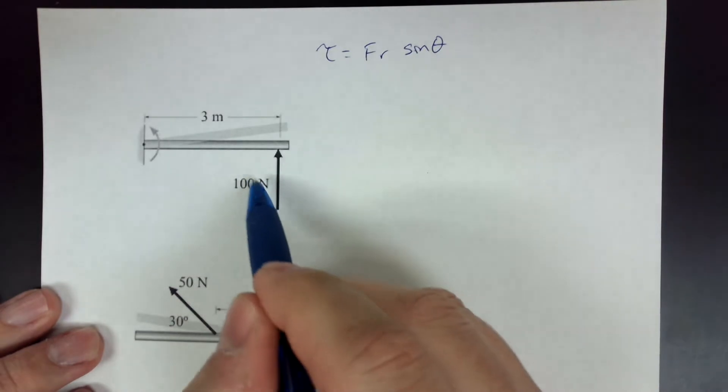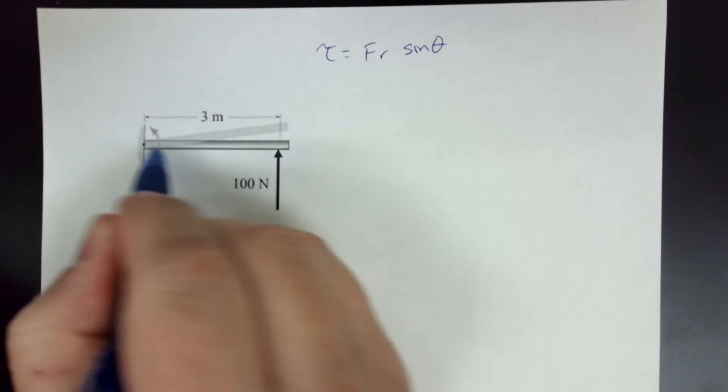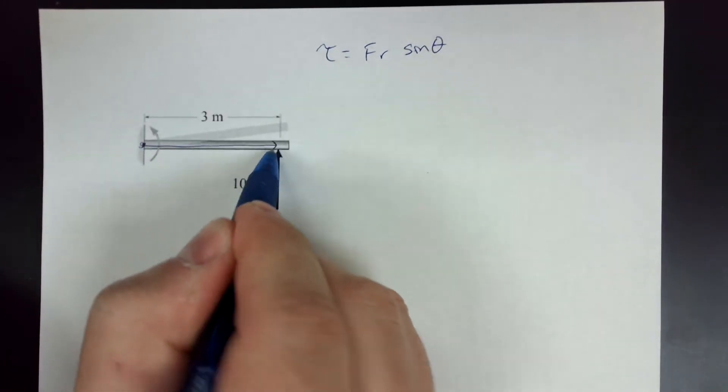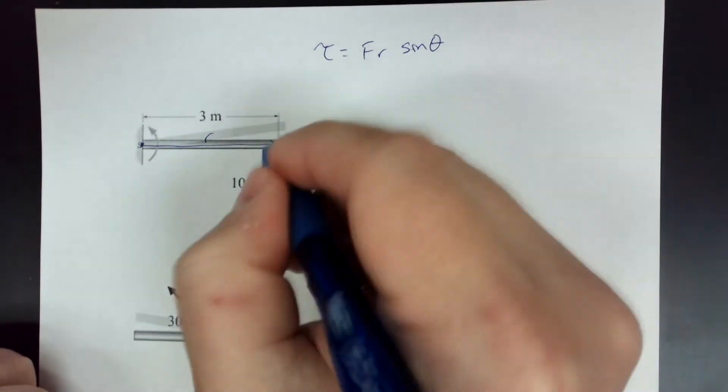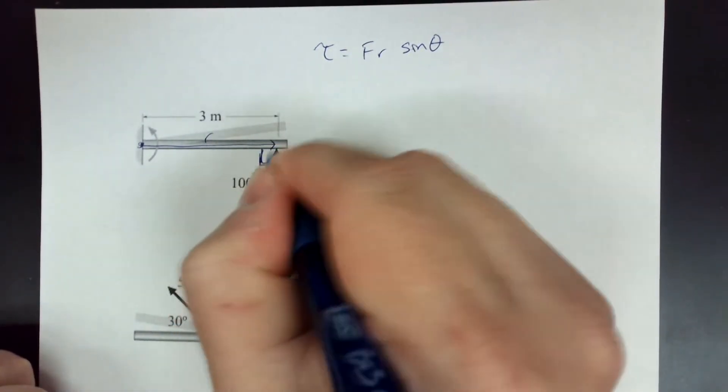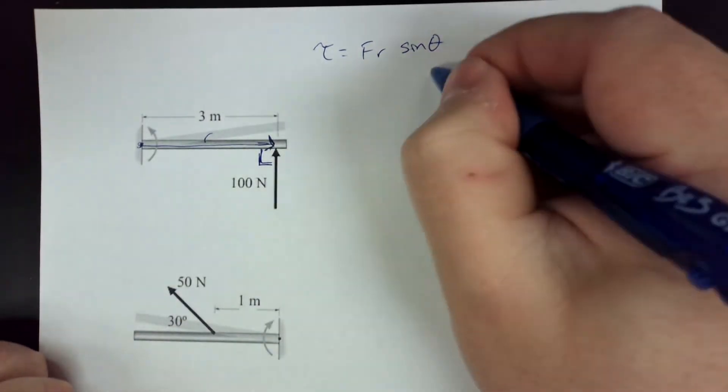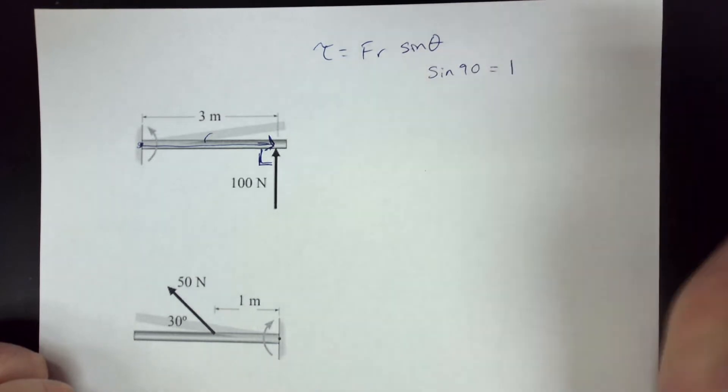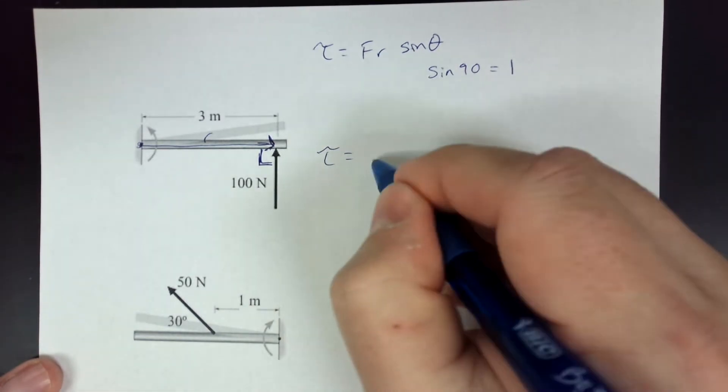This first one is pretty simple. F is 100 Newtons and your R, remember R is the distance from the rotation point out to where the force is applied. So you get the whole three meters. We don't need sine theta because the angle between the two vectors, between the F and the R vector, is 90 degrees and the sine of 90 is 1. So there's no point in multiplying by 1. To get the torque it's just F times R.